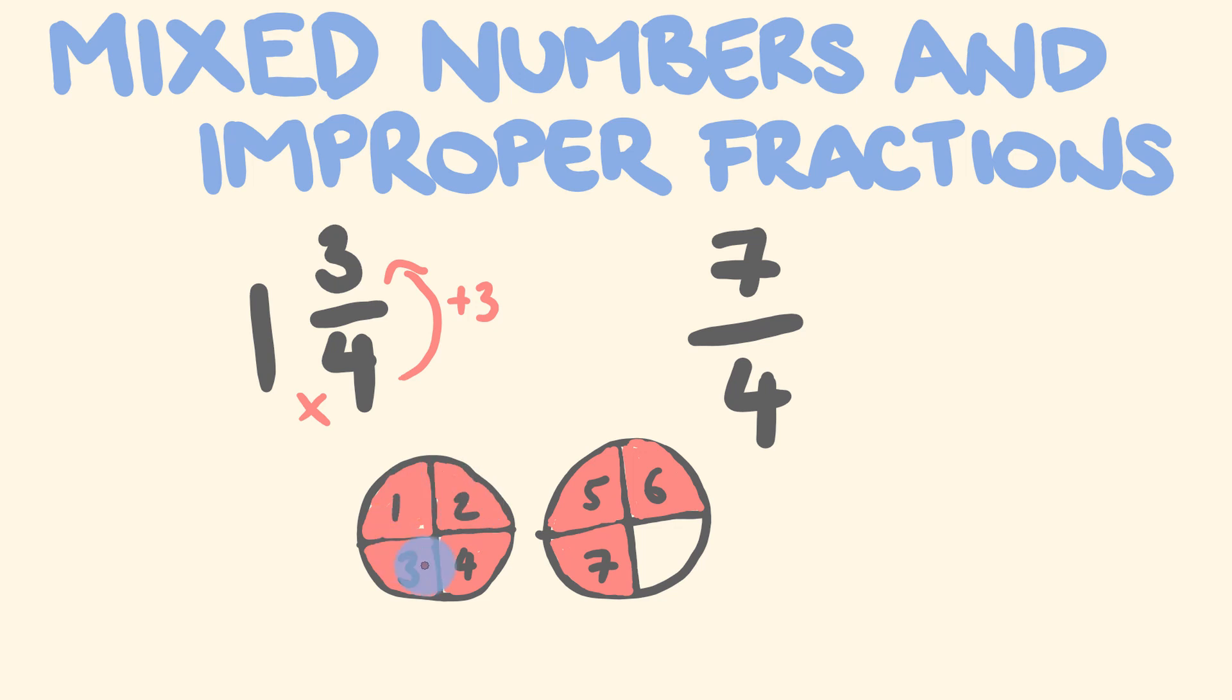So one group of 4, which is this 4, plus these three here. 1 times 4, which is 4, plus 3 is equal to 7. We get the 7 and we just place it over the same denominator.